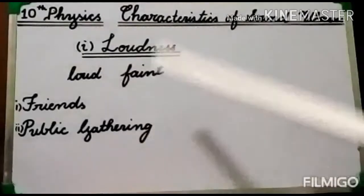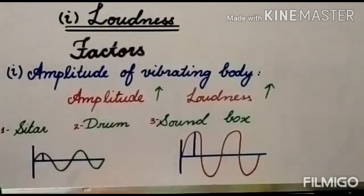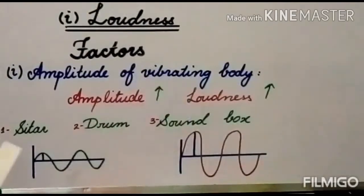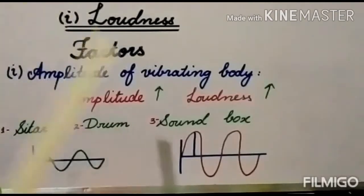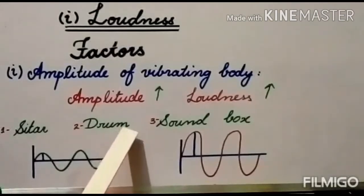But if you have to address a public gathering or deliver a lecture in class, the voice should be loud. First, I will discuss how the amplitude of the vibrating body affects the loudness of sound — more amplitude means more loudness. For example, if you pluck the strings of a sitar with less amplitude you get a low sound, but if you pluck them more violently the sound will be loud. Same with the drum: striking with less force and less amplitude produces a quieter sound, but striking harder so the surface vibrates with more amplitude produces a loud sound.